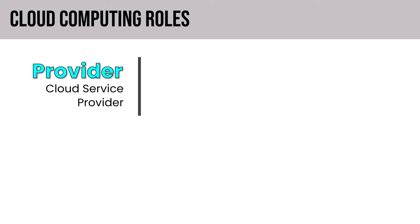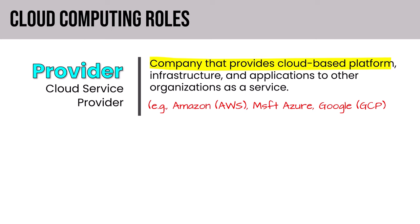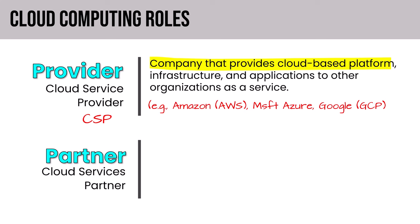On to cloud computing roles. The cloud service provider is the company that provides the cloud-based platform, infrastructure, and applications to other organizations as a service. Examples include Amazon's AWS, Microsoft Azure, and Google Cloud Platform — the big three. If you see the CSP acronym in a question, they're talking about the cloud service provider, not to be confused with cloud services partner.